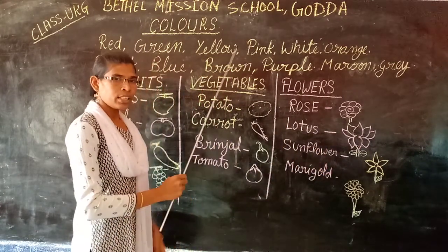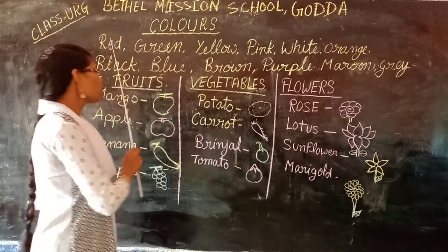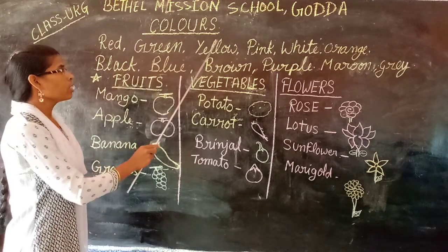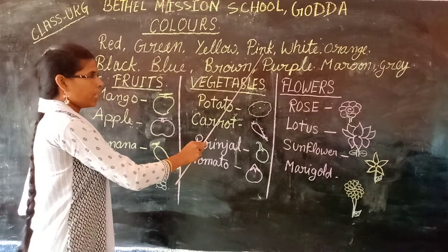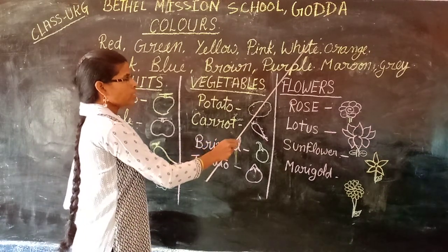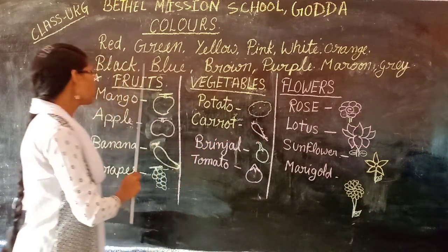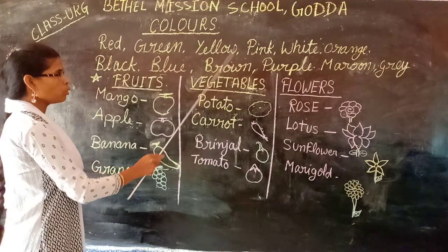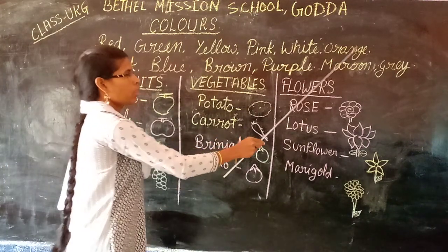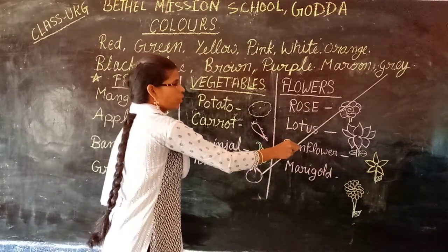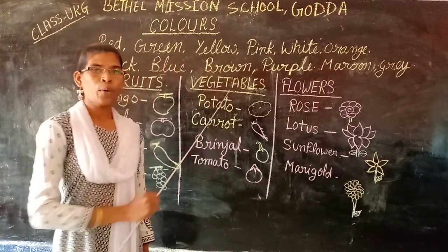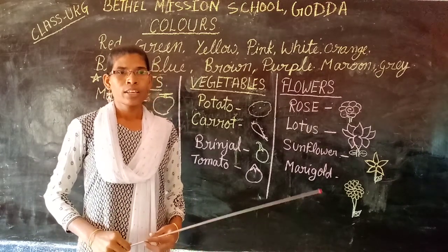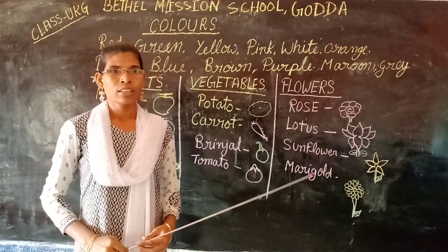So children, now you read along with me. Red. Green. Yellow. Pink. White. Orange. Black. Blue. Brown. Purple. Maroon. And gray. So now we have seen and learned the different colors, their spelling and name.